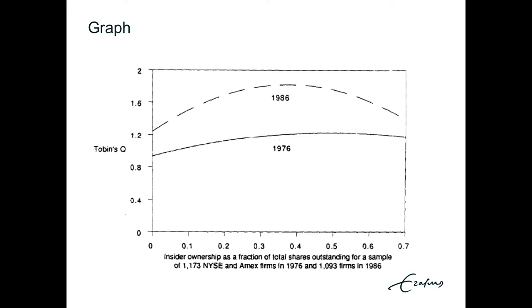I would like to show you this graph to give you a better understanding of what they want to test. Previous research already showed that there is a curvilinear relation between Tobin's Q and insider ownership. On the x-axis you see the fraction of insider ownership and its effect on Tobin's Q. At first the relation is positive, but at one point it becomes negative. That point where it changes from positive to negative — where the derivative is zero — we call the inflection point. In this research, they want to test what effect the independent variables have on that inflection point.